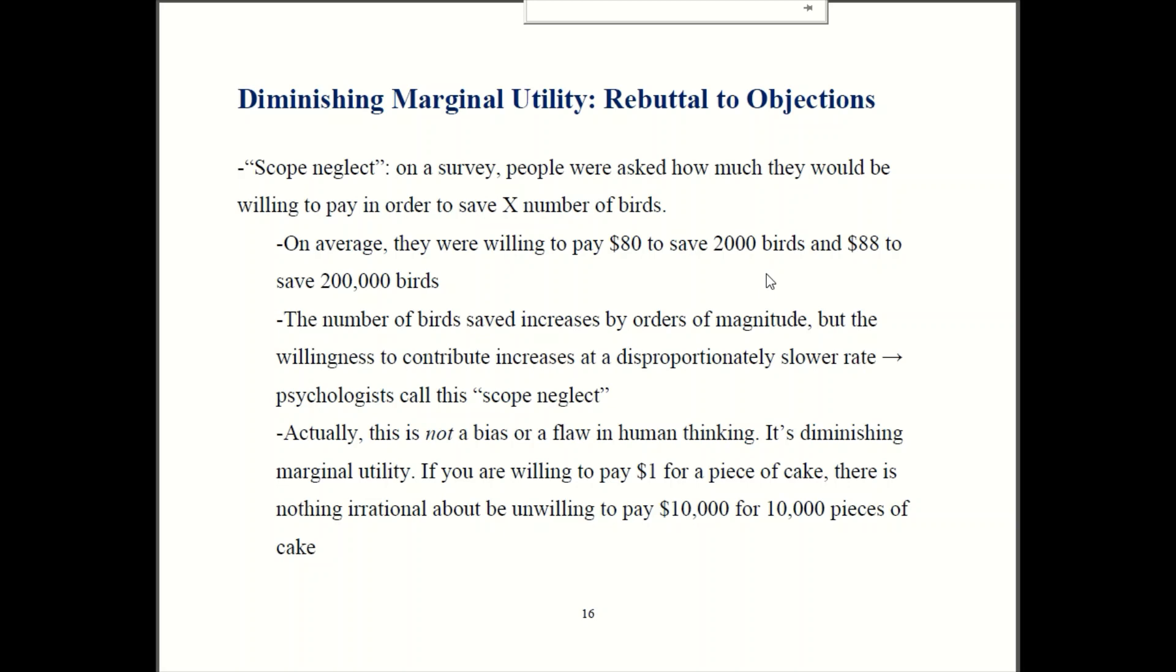So I read this. I was rather amused by it because this is actually not irrationality at all or some kind of bias in human behavior. Actually it's entirely consistent with economic theory. This is just our friend, diminishing marginal utility. So if you pay one dollar to have one slice of cake but you're unwilling to pay ten thousand dollars for ten thousand slices of cake, are you irrational? Of course not.